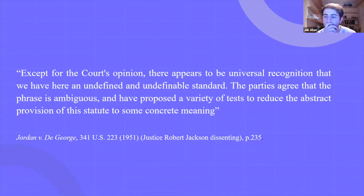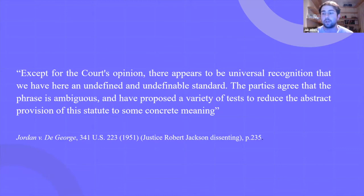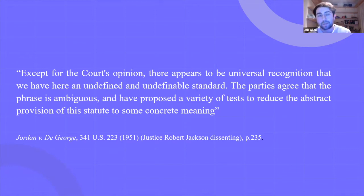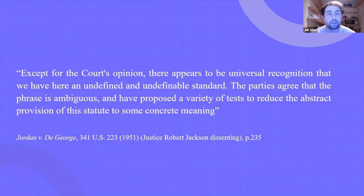Both of these standards — good moral character and moral turpitude — proved very problematic for judges, particularly in the early to mid-20th century, due to their vague definitions and lack of legislative guidance. Congress has not provided much in the way of set criteria. The ambiguity can be traced back further still — it first appeared in the 18th century as a prerequisite for citizenship in the country's first naturalization statute of 1790.